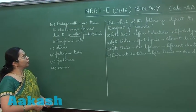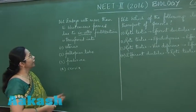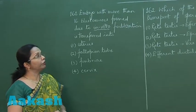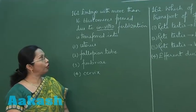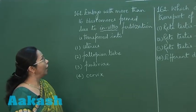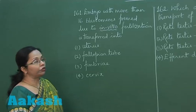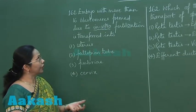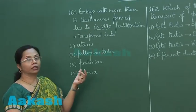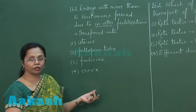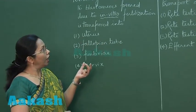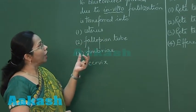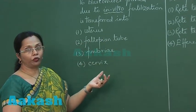Question 161: An embryo with more than 16 blastomeres formed as a result of IVF will be transferred into — in this case, once IVF fertilization has occurred in a glass test tube, there are two ways in which it can be transferred.